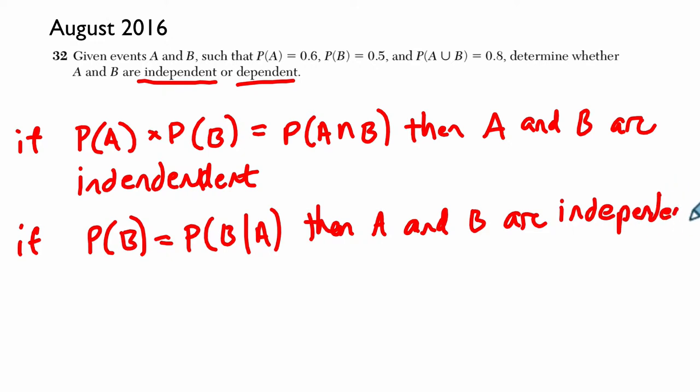All we have to really say there is, well, the probability of B happening is the same, given that A has happened. If it's still the same probability, then that means A had no impact on B and they're independent.